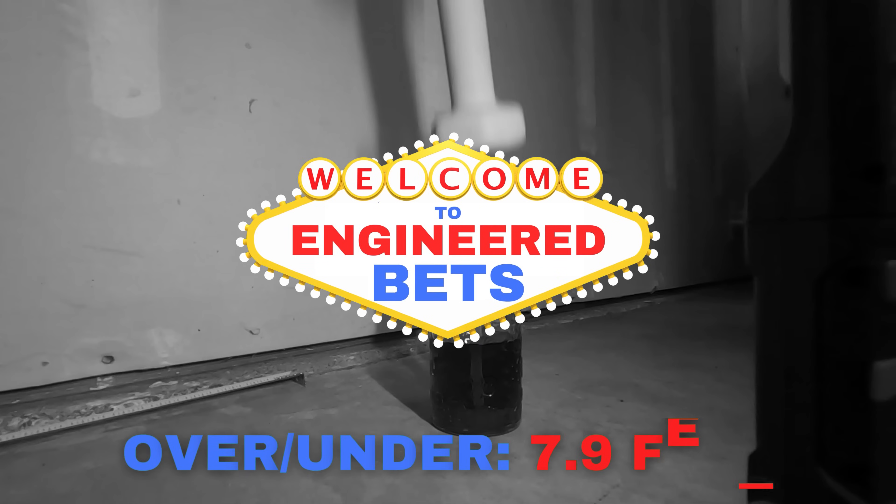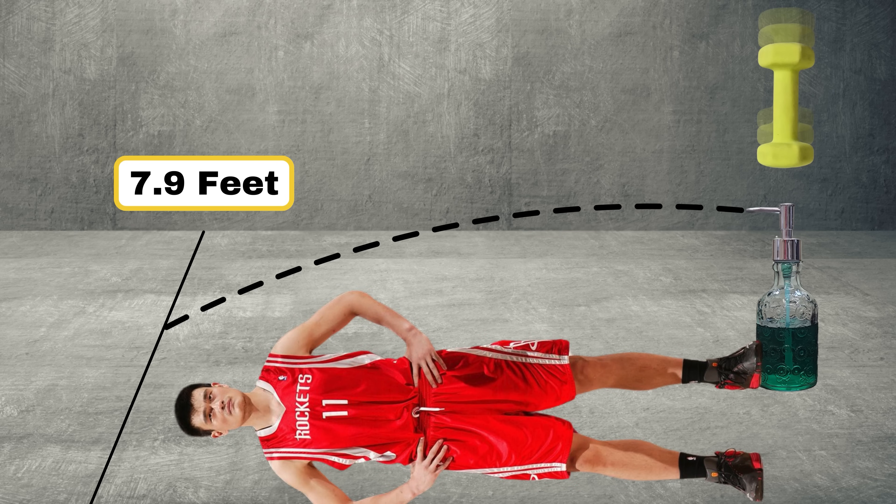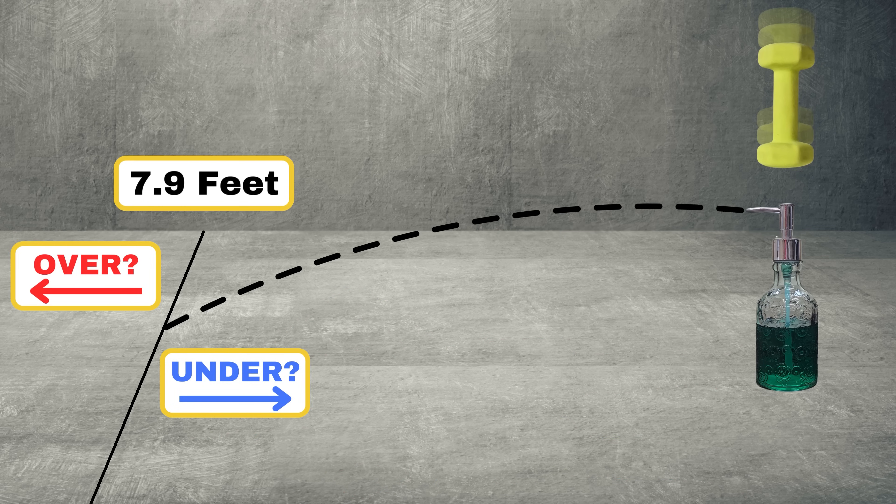Welcome back to Engineered Bets. Today's line is 7.9 feet, which is slightly longer than Yao Ming is tall, and it's your job to predict whether the soap will travel further or less far than this calculated line.